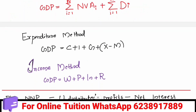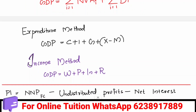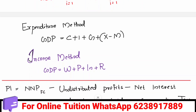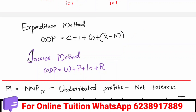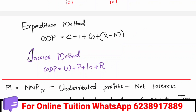The expenditure method is C plus I plus G plus X minus M. The income method is W plus P plus IN plus R — that is the factors of production and their rewards: wages, interest, profit, etc.